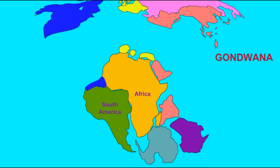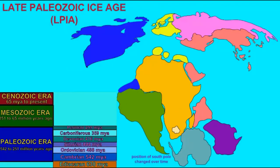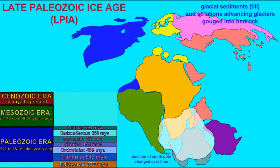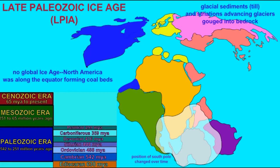We now know that there was a late Paleozoic Ice Age, which occurred throughout the Carboniferous and early Permian, which affected primarily the southernmost continents. Evidence of glacial activity — glacial sediments known as till, and striations in bedrock as boulders were pushed ahead of advancing glaciers — these occurred on continents which are largely tropical.